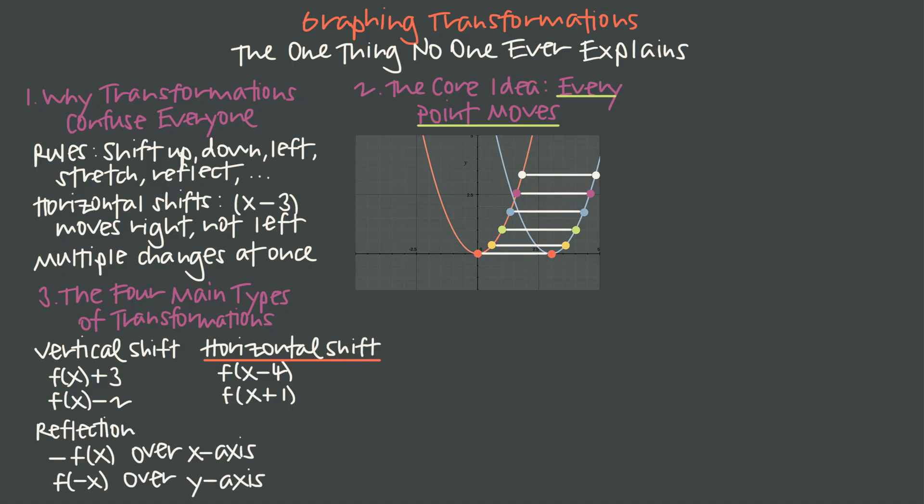We also need to know about reflections, where multiplying the function by negative 1 reflects the graph or creates a mirror image of it over the x-axis, whereas replacing x with negative x is going to reflect the graph over the y-axis. It's going to create a mirror image of the curve across the y-axis.